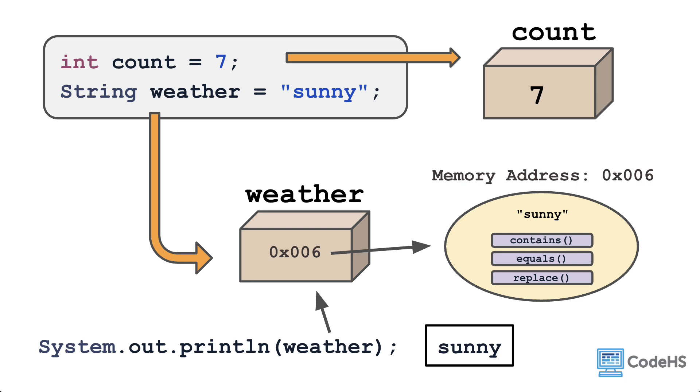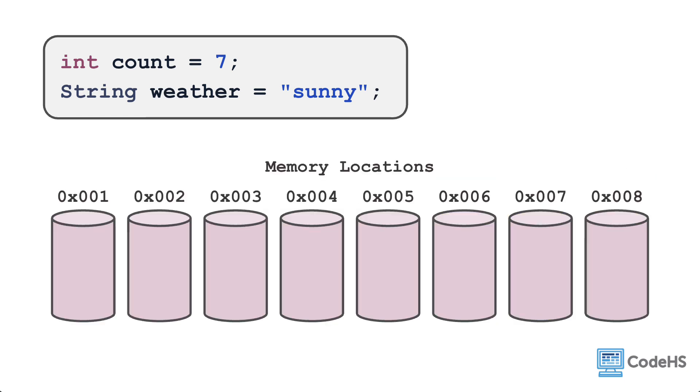To look at this in one other way, imagine these cylinders are all locations in the computer's memory. When the primitive variable is created, it gets stored at location 0x001 with its integer value of 7. When the string object gets created, however, due to internal memory processes, it gets stored at 0x006, and the weather variable is stored at 0x002 with the object's location reference of 0x006. Whenever the weather variable is used, 0x002 lights up and points to 0x006 so that the actual string object is being accessed and used.